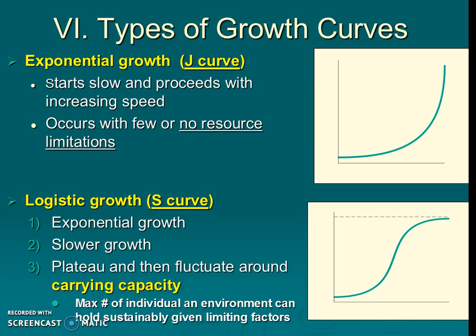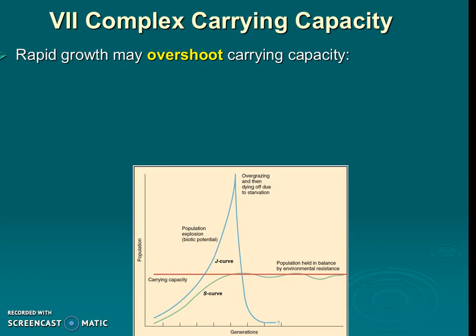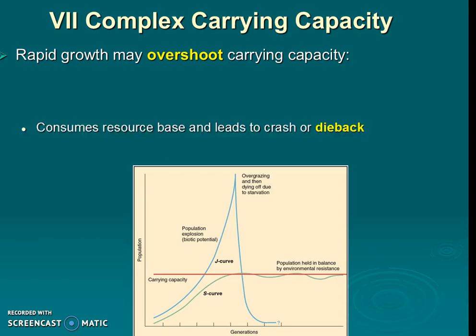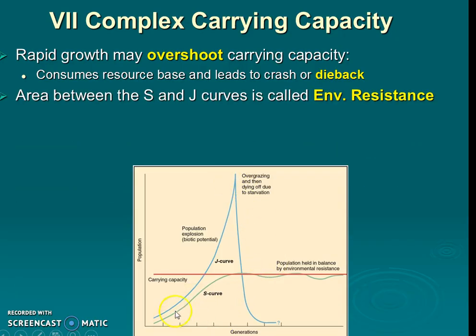Don't forget the definition of carrying capacity. It's a complex concept — humans may be overshooting carrying capacity, meaning going over it. Invasive species can also overshoot carrying capacity, overusing resources, which can harm prey populations or deplete fuels, eventually causing a dieback. The area between the S-curve and the J-curve — the gap between them — is called environmental resistance.